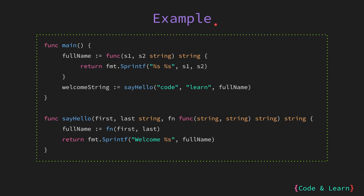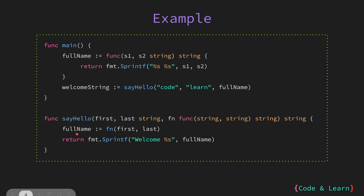Now let us look at some examples. First off we have an example of a function accepting another function. Here we have sayHello which accepts the first and last name as strings, and a function fn which has a signature of string, string as input parameters and a single string as output parameter. The sayHello function returns a string. Inside, we get the full name by calling the function passed to us with the first and last name, then print the welcome message.